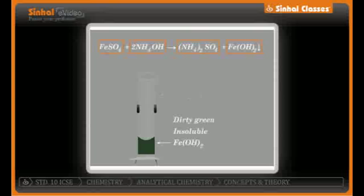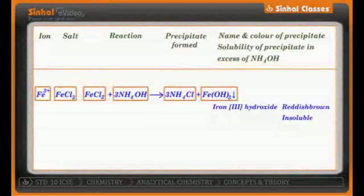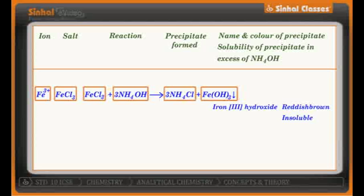Ferrous hydroxide is dirty green, or light green in color, and is again insoluble in ammonium hydroxide — similar to what we saw with sodium hydroxide. Next, ferric chloride treated with ammonium hydroxide will give you ammonium chloride and ferric hydroxide. Ferric hydroxide — what was its color with sodium hydroxide? Reddish brown, right. It is similarly reddish brown, and again insoluble in ammonium hydroxide.